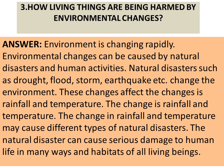Question three: How are living things being harmed by environmental changes? Answer: The environment is changing rapidly. Environmental changes can be caused by natural disasters and human activities. Natural disasters such as drought, flood, storm, earthquake, etc. change the environment. These changes affect rainfall and temperature, which may cause different types of natural disasters. The natural disasters can cause serious damage to human life and the habitats of all living beings.